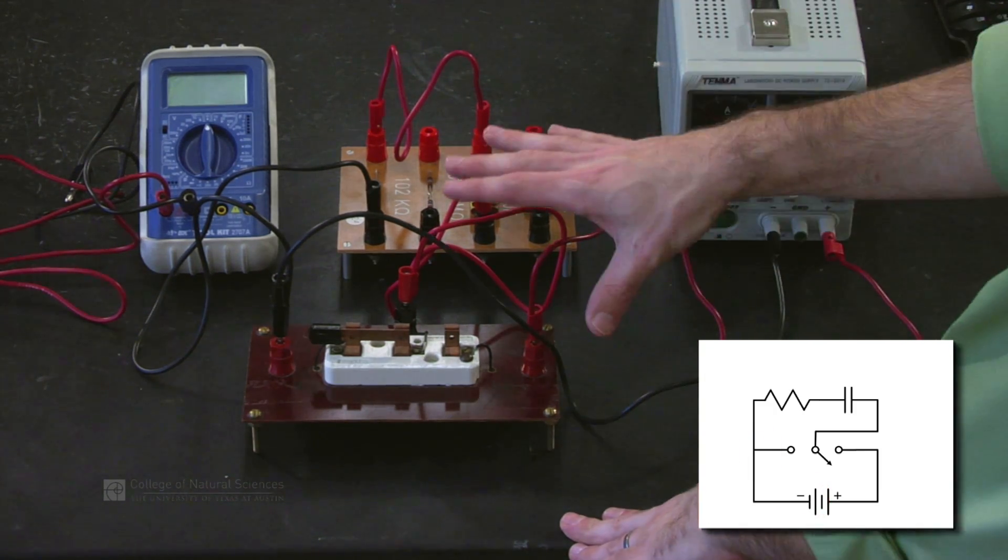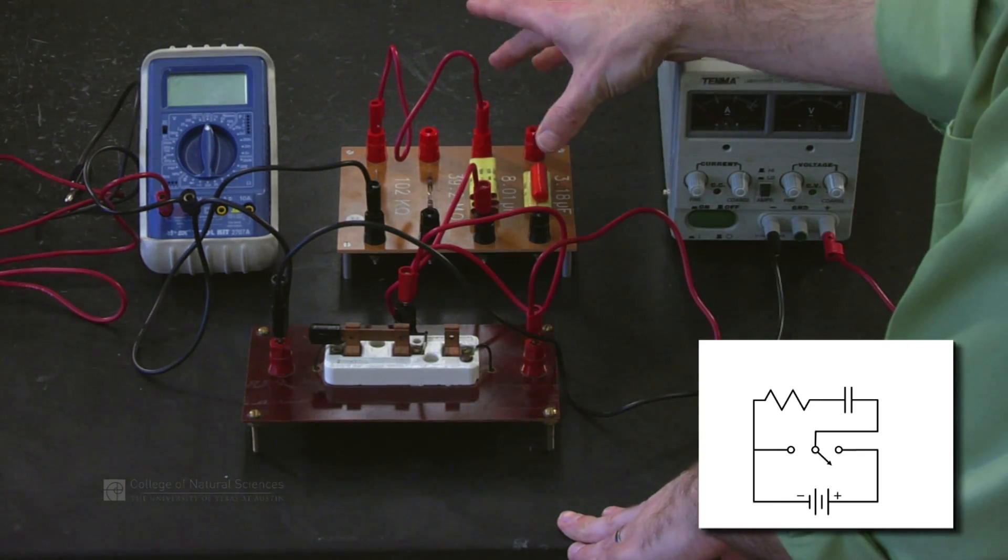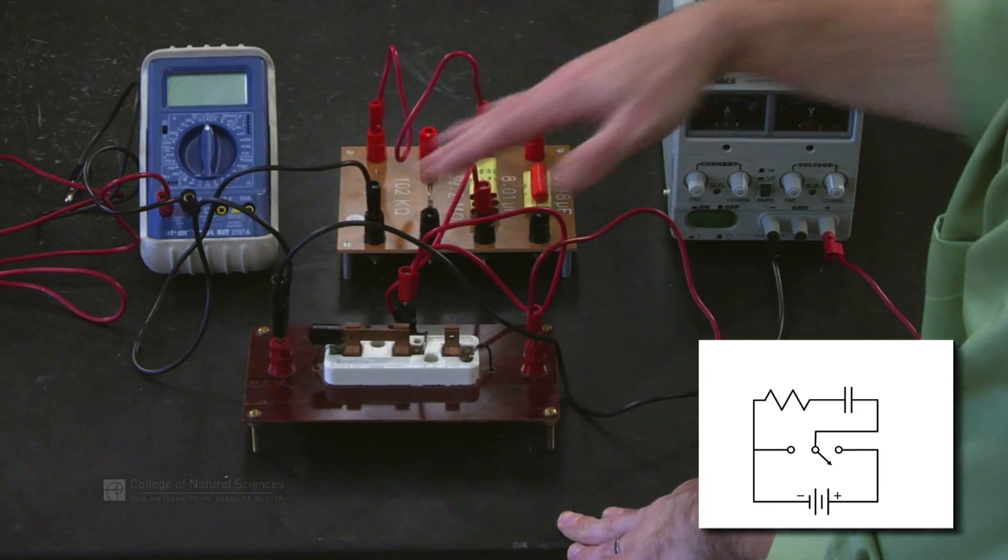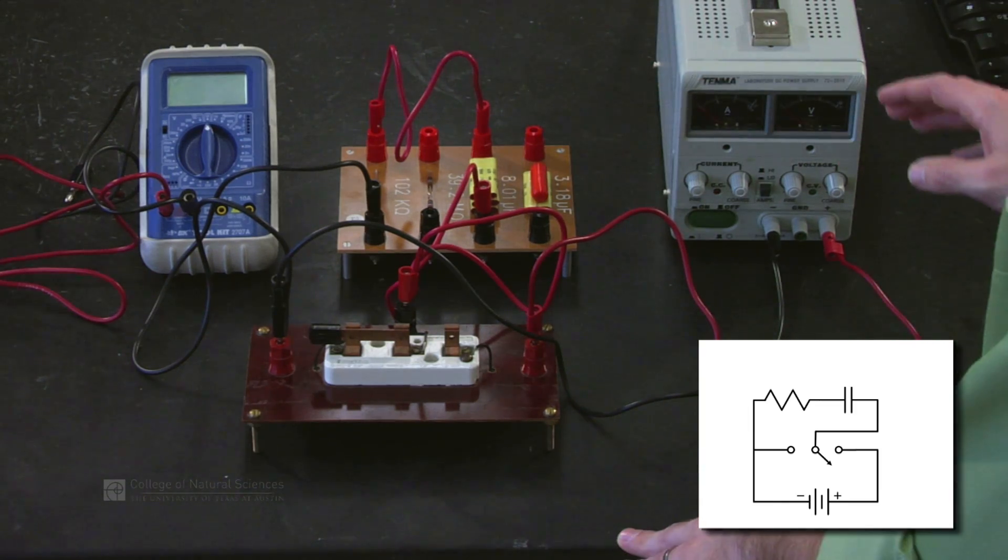Our voltage source is hooked up to our switch. Our switch is connected to the capacitor which is connected to our resistor. Everything looks good.